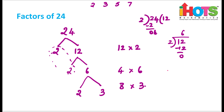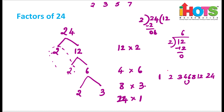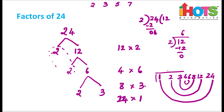You can also write it as 12 into 1 and 24 into 1, which we had missed out. With that, we have found all the factors: 1, 24, 2, 12, 3, 8, 4, and 6. So these are all the factors of 24.